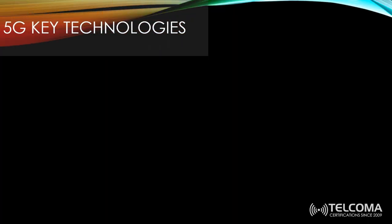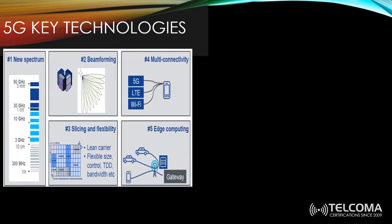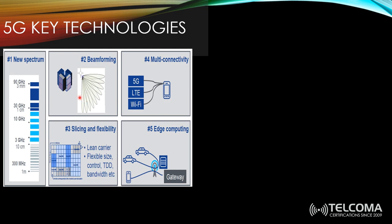5G technologies will have some evolution from previously deployed 4G technology, enhancing existing features while some technologies are brand new. Beamforming, for example, is not a new technology — it has been used in 4G with 4x4 and 16x16 layers and practically implemented by many operators. Other features like network slicing are brand new and have never existed in 4G, and will also not be available in non-standalone 5G.